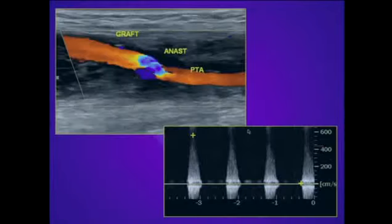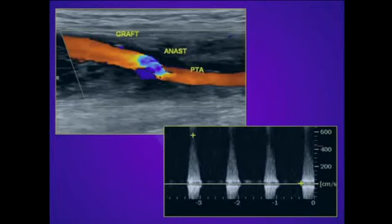Here's an example of a significant stenosis at the distal anastomosis of this bypass graft. The color Doppler tells the whole story — we can see evidence of aliasing at the distal anastomosis, and the peak systolic velocity at this location is almost 600 centimeters per second.